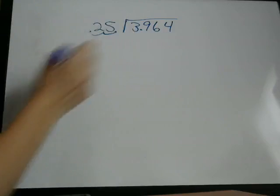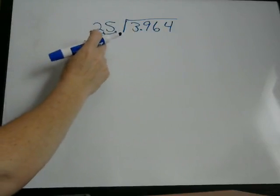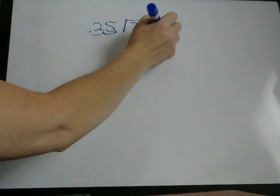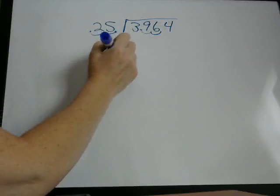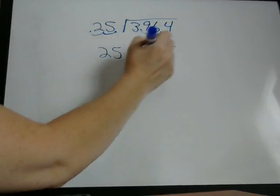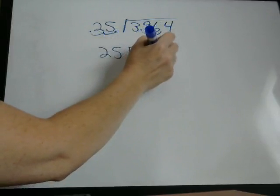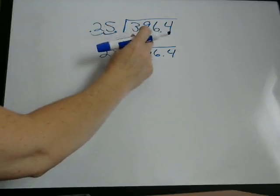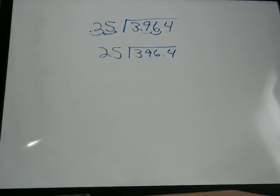1, 2. If we move this to the right too, we have to move this to the right the same number of times. So twice. 1, 2.